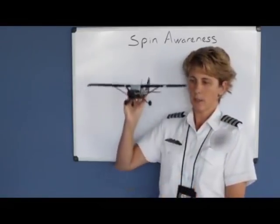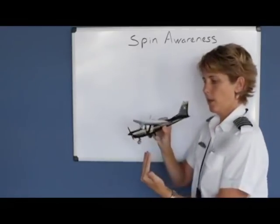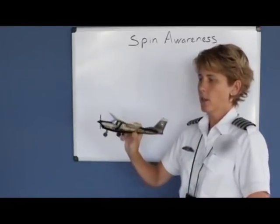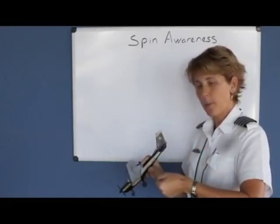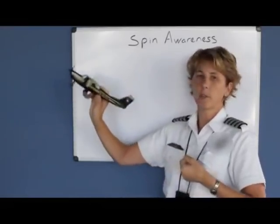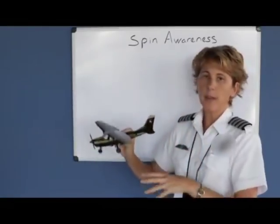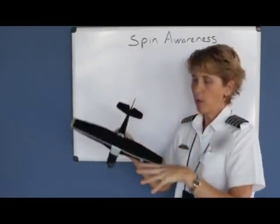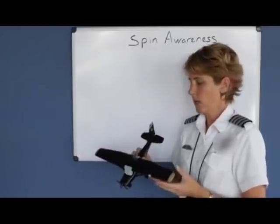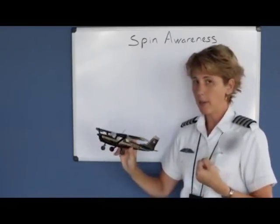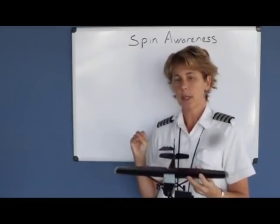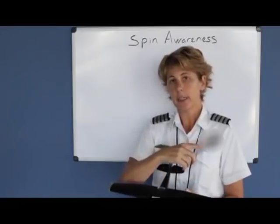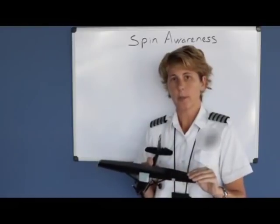Since we're falling straight down, we need to recover from the stall. We need to pitch the airplane down momentarily to reattach the wind to the wing so we can fly again. Once we've stopped the spin, we recover from the stall and then recover from the dive. The reason we pull the throttle back to idle is so we don't gain so much airspeed at the end and exceed our Vne — our never-exceed speed — and cause structural damage to the airplane.